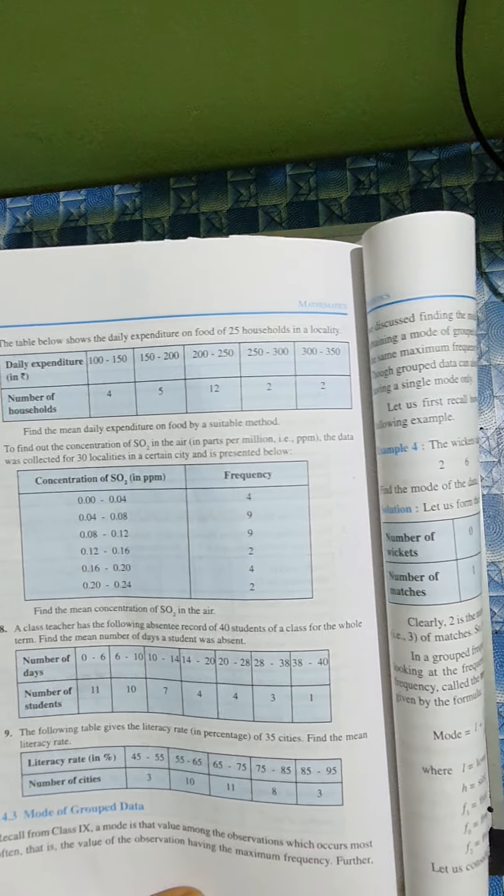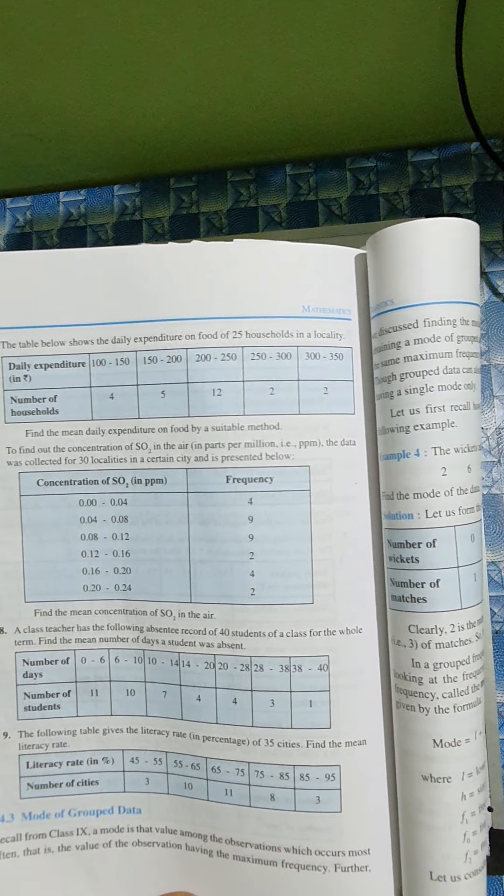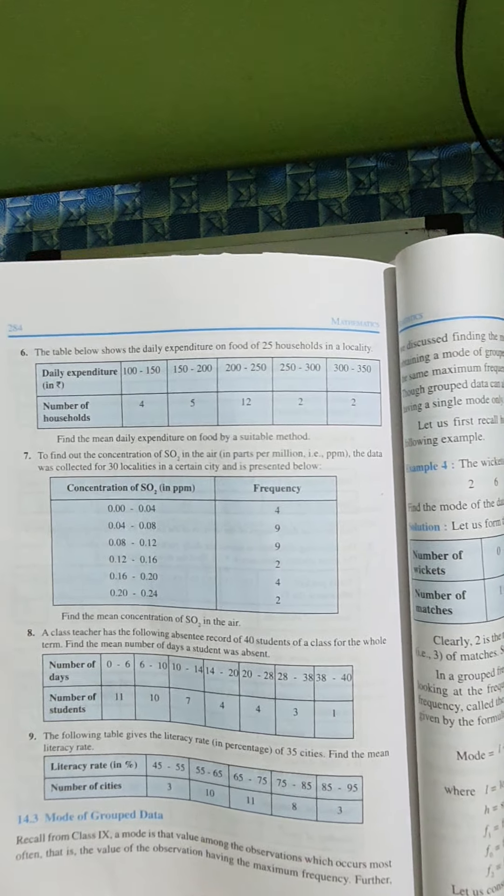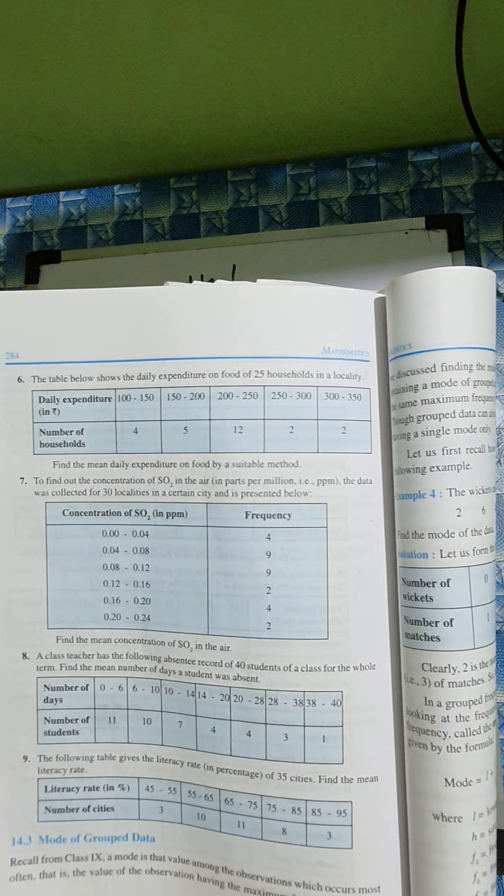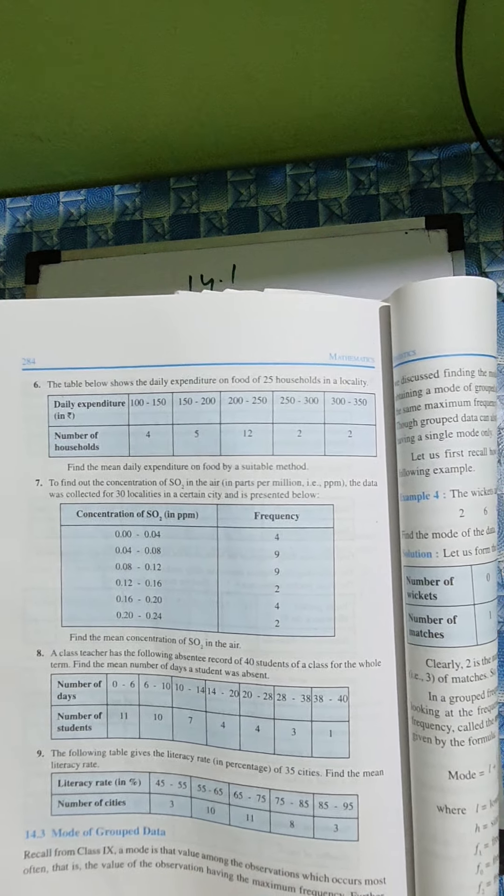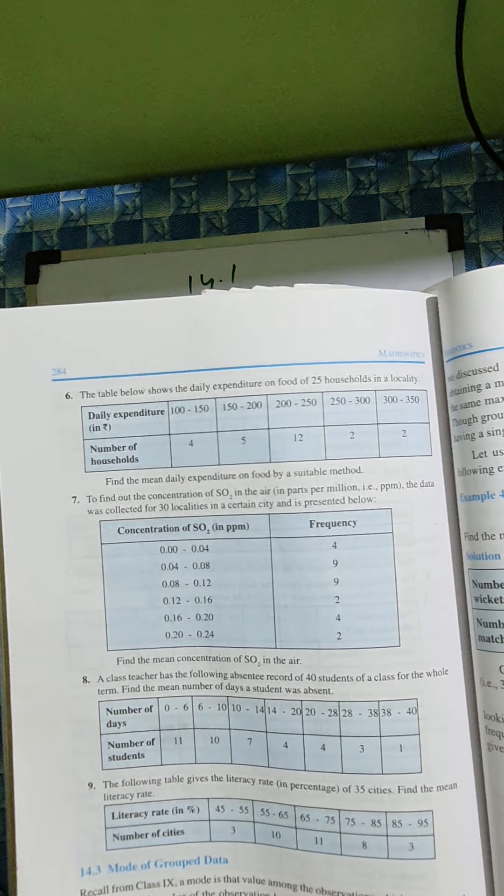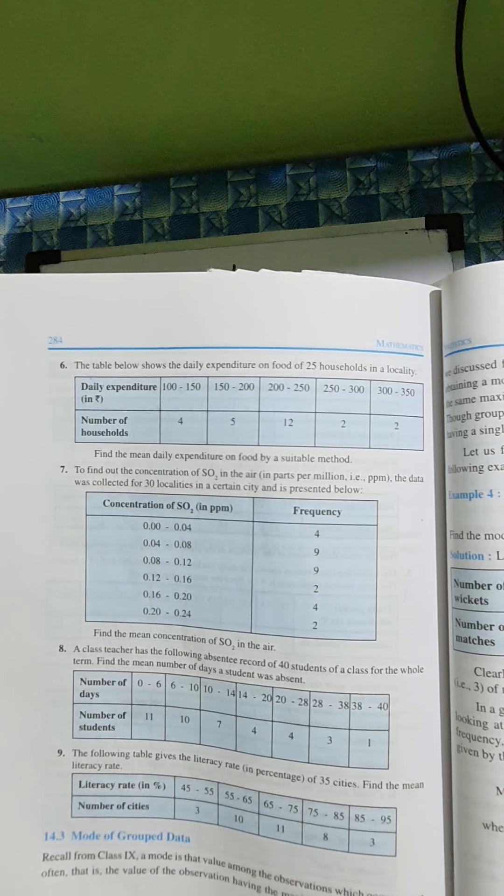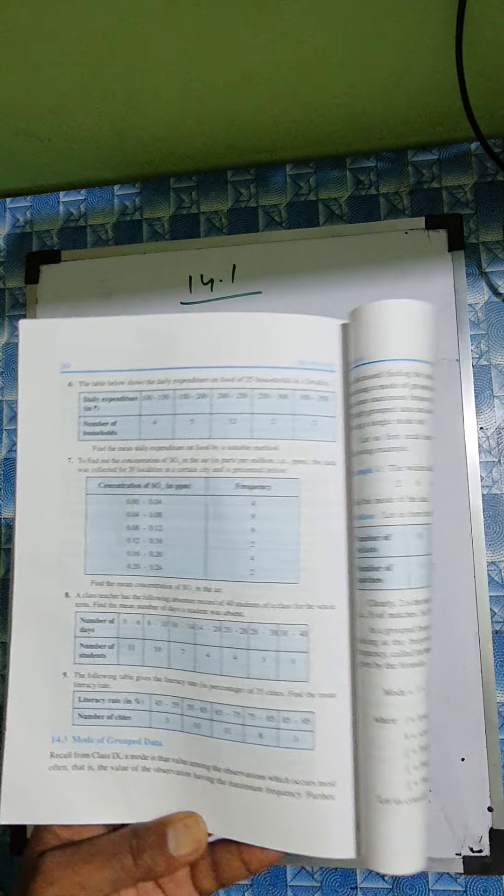So here also we can do any method. This one 45 to 55, 55 to 65, the class is equal. So we can use step deviation or you can do assume also. Last question I did the assume method, I'll just do here step deviation. But you can do any method. But in the exam, what method they ask, only we have to do.